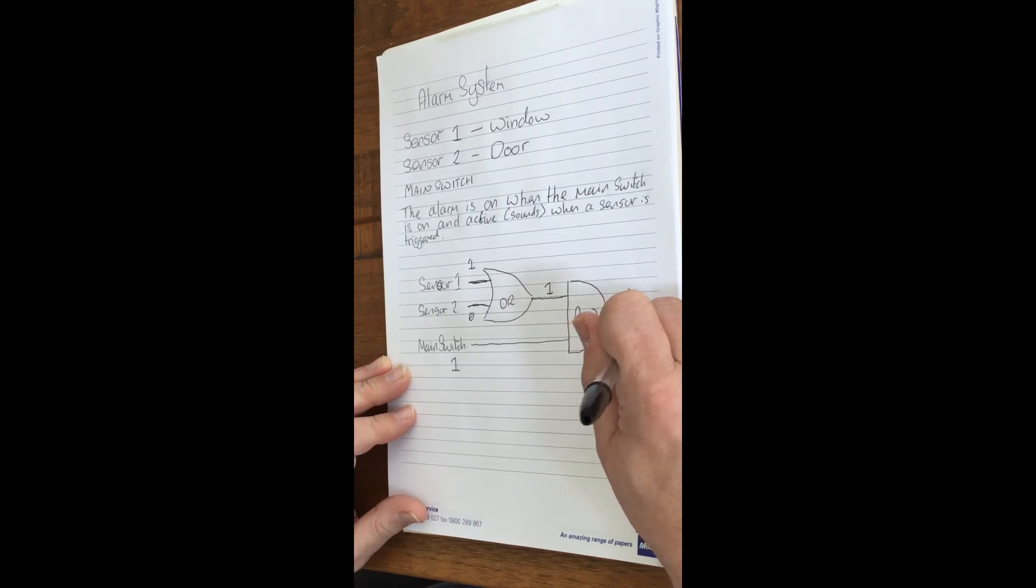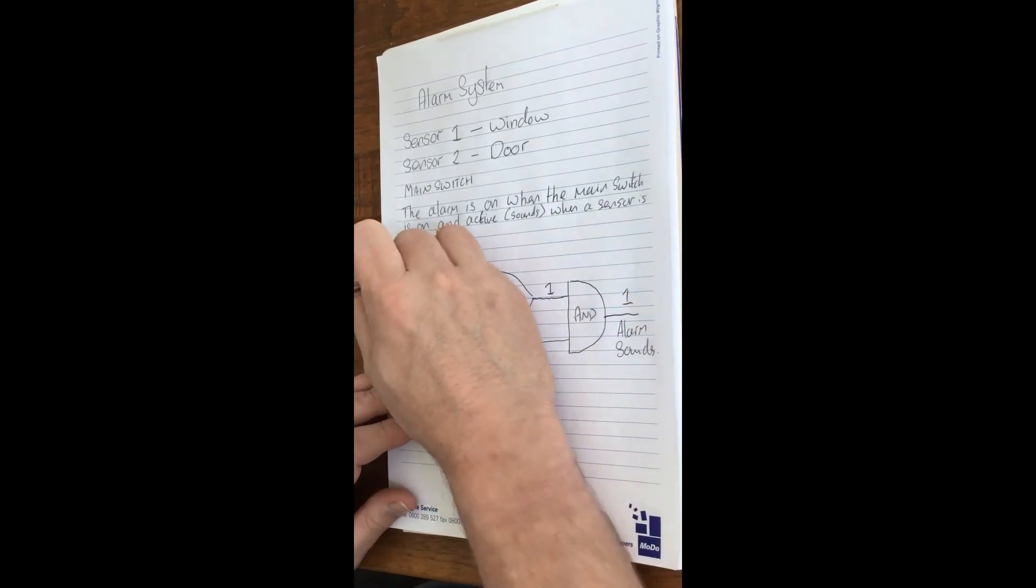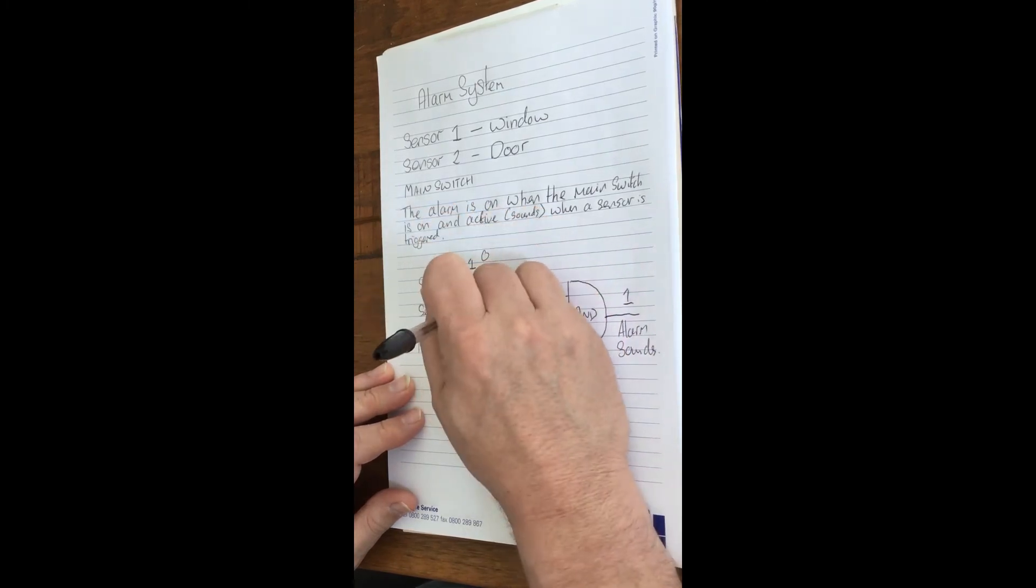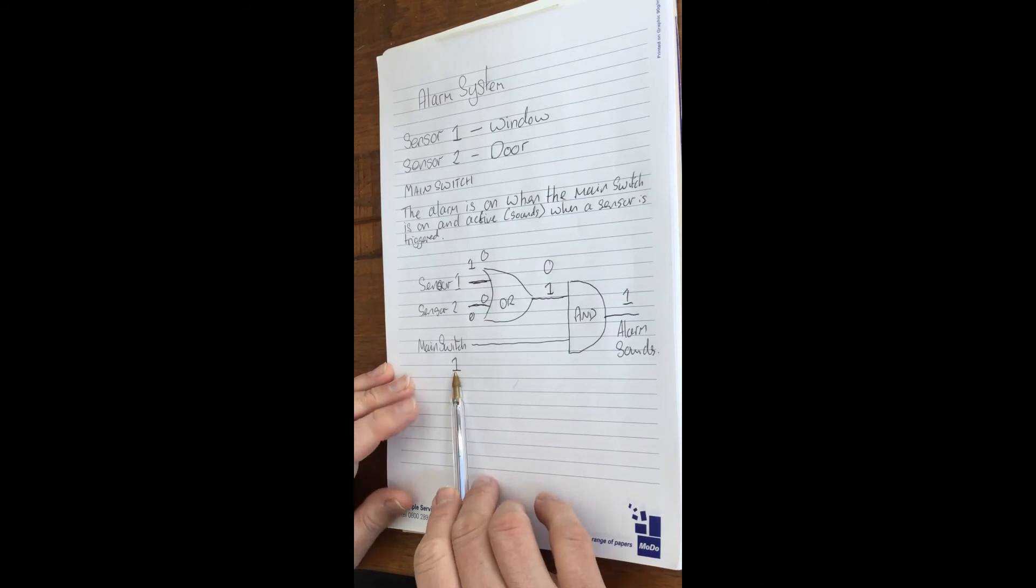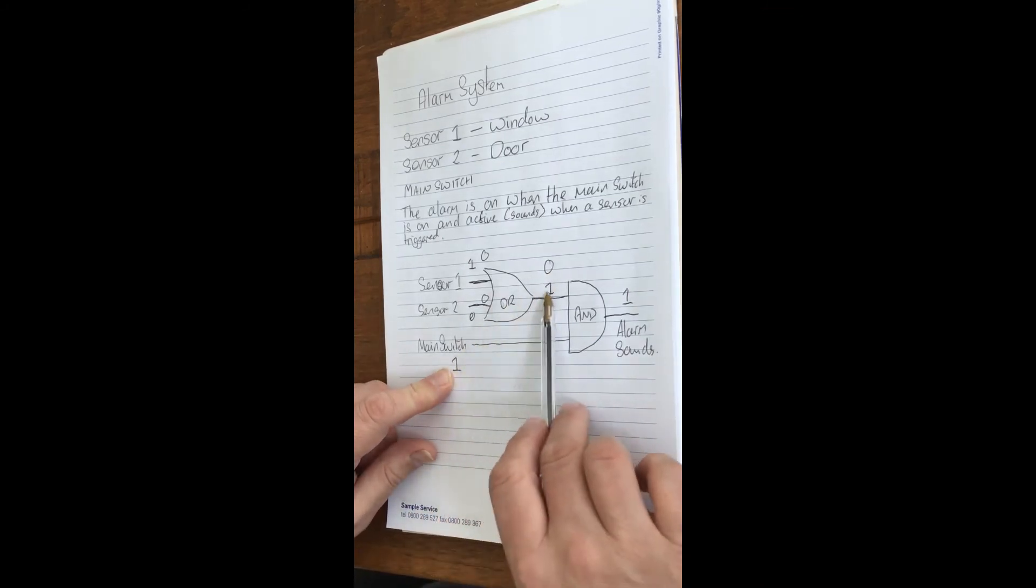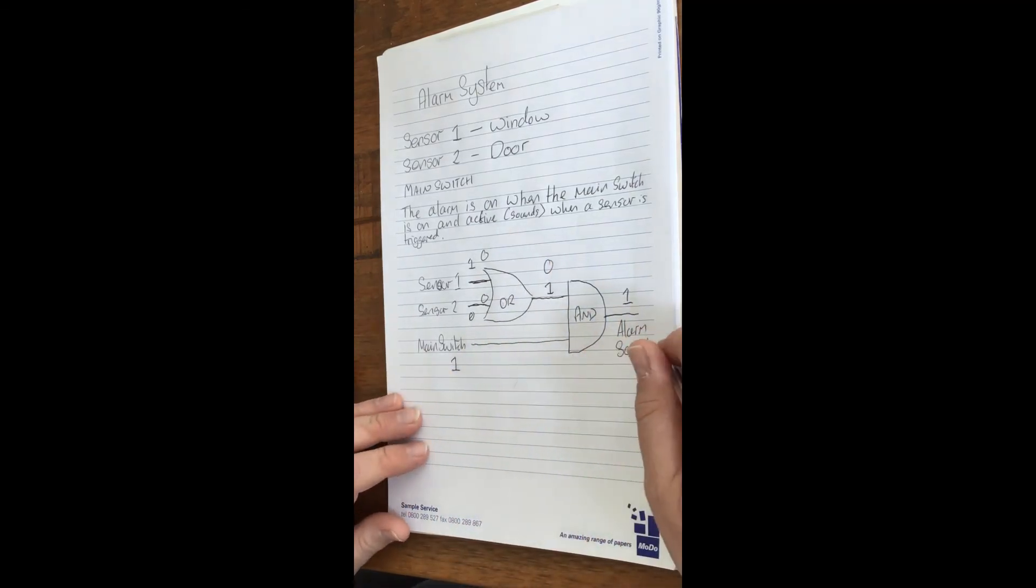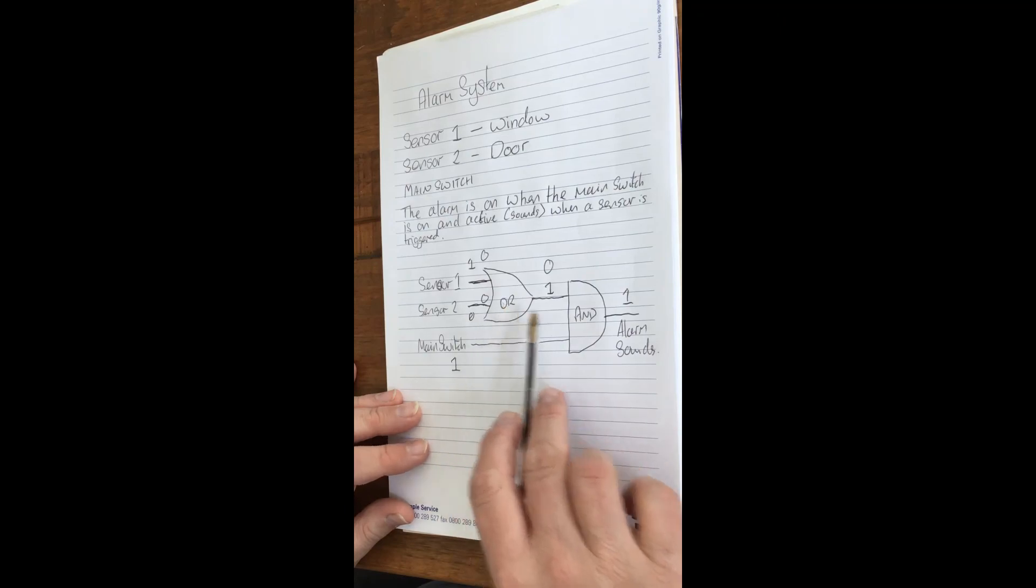But then if none of the sensors are active, so both are zero, then that would become a zero there. Even if the main switch is on, we need a one and a one to make this active. We've got a one and a zero now, so the alarm would not sound. That's the basis of a simple alarm system using two logic gates.